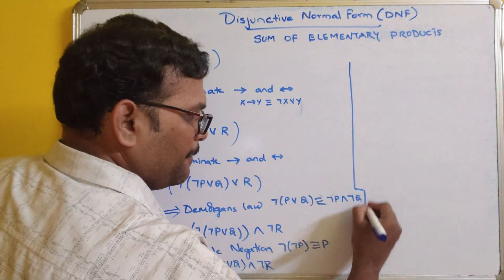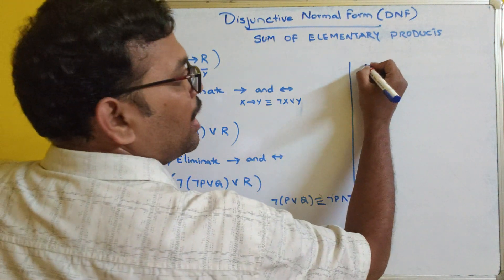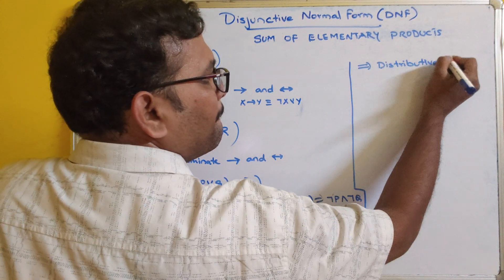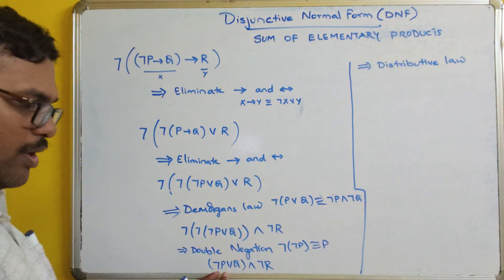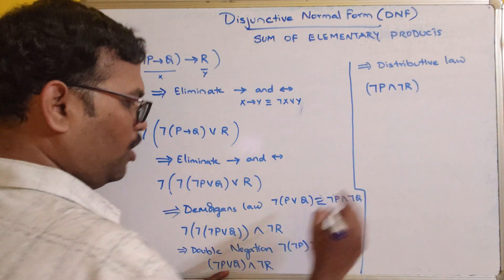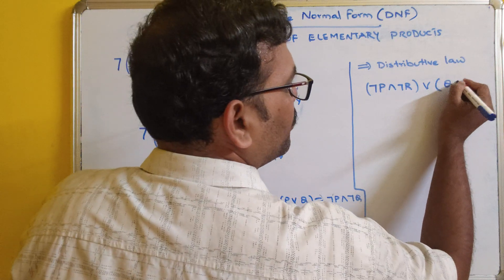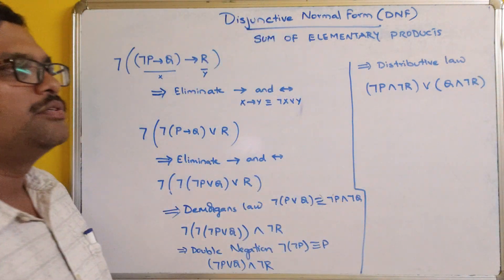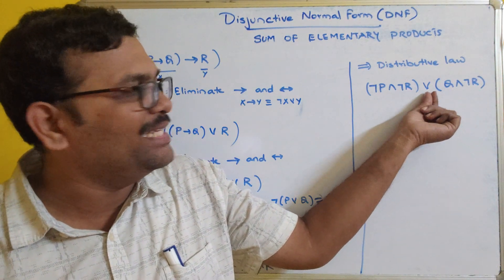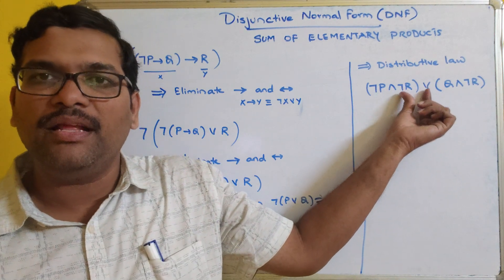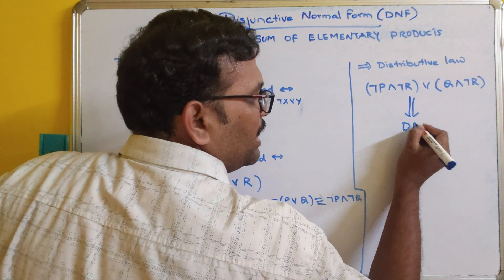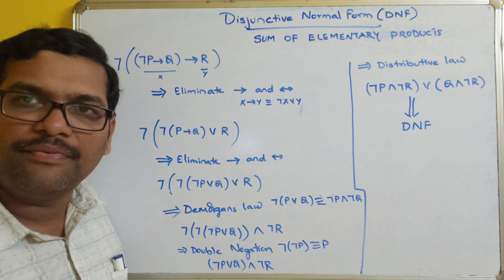Now apply the distributive law. (Negation P or Q) and negation R gives us (negation P and negation R) or (Q and negation R). If you observe, these two are elementary products and the connective between them is a disjunction — this is nothing but sum of elementary products. So this is in the form of Disjunctive Normal Form, DNF.